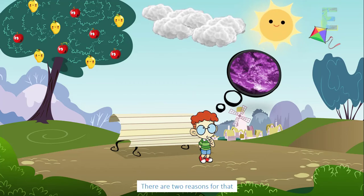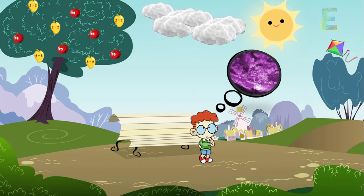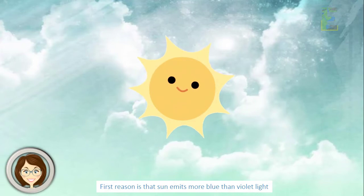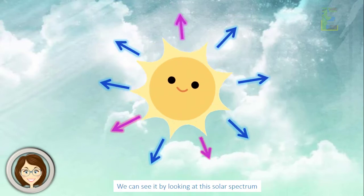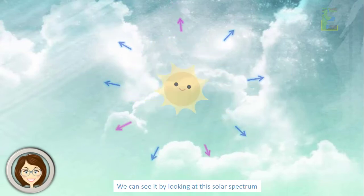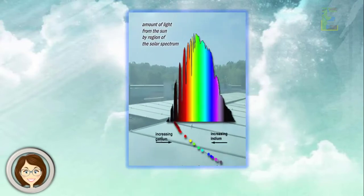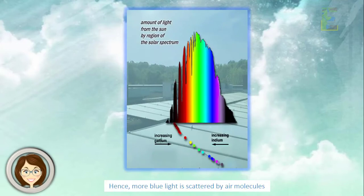There are two reasons for that. First reason is that the sun emits more blue than violet light. We can see it by looking at this solar spectrum. Hence, more blue light is scattered by air molecules.